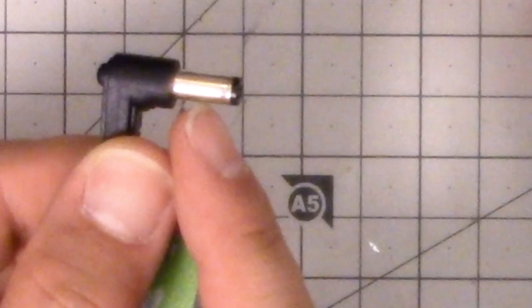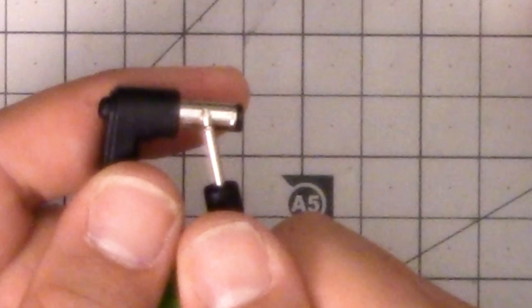In general, with these barrel jacks or barrel plugs, and really any plug like this, the outside part is usually negative or ground, and the inside part is usually positive.